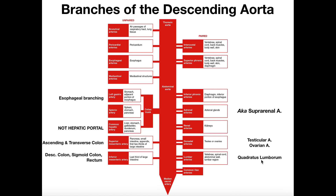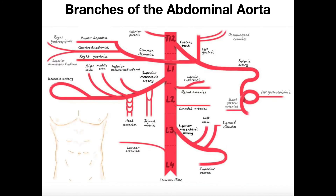The last arteries going down the abdominal aorta are the lumbar arteries — left and right. They're often omitted from models and are very thin arteries. The lumbar arteries serve the vertebrae, spinal cord, abdominal wall, lumbar region, and muscles in that area — such as the quadratus lumborum. They originate at the very top of the L4 region, below the inferior mesenteric artery. Because they're often omitted from models, I don't like to use them as a landmark.